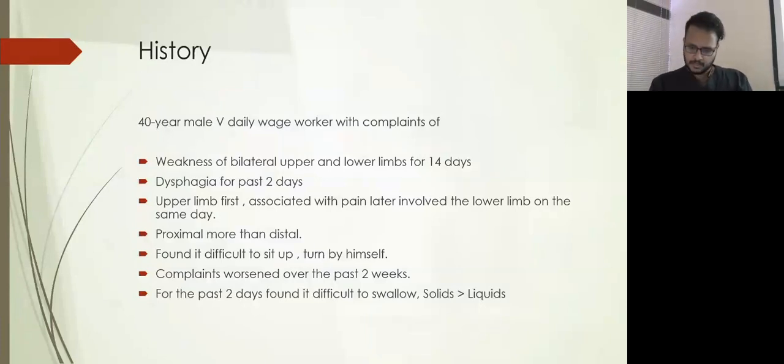His weakness had started in his upper limb, more towards his upper arm and shoulders, then later involved his lower limb. It was more towards his shoulder rather than his wrist. He was able to eat and mix food, but found it difficult to lift his hand above his head. As a daily wage worker for painting, he found it difficult to lift his paint bucket and paint while climbing up on the ladder.